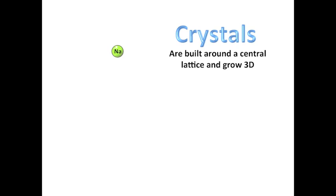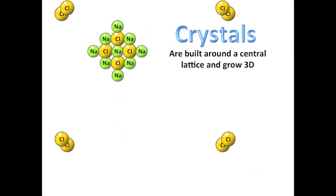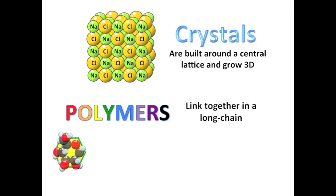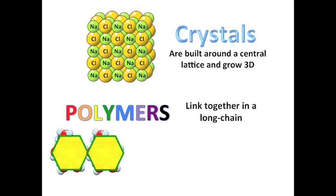So let's review. Crystals are grown by combining atoms in a repeating pattern three-dimensionally around a central lattice, while polymers grow by linking molecules in a long chain.